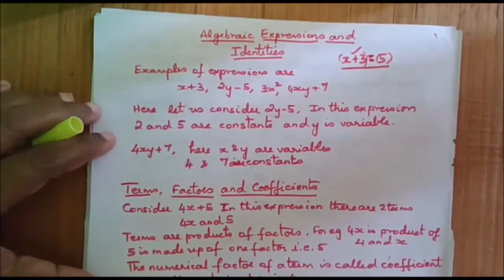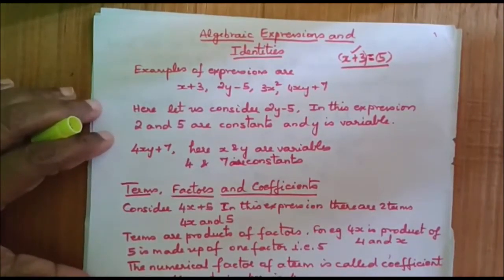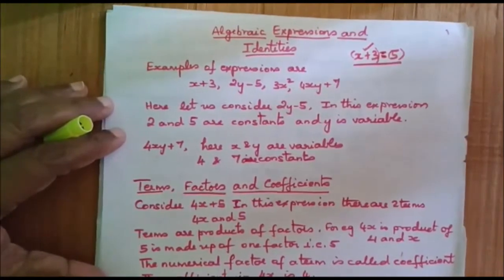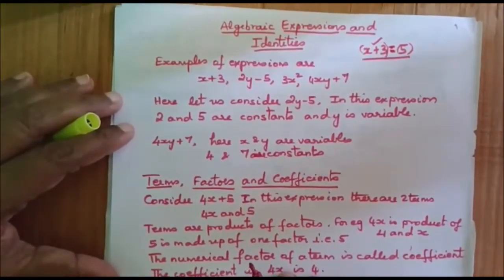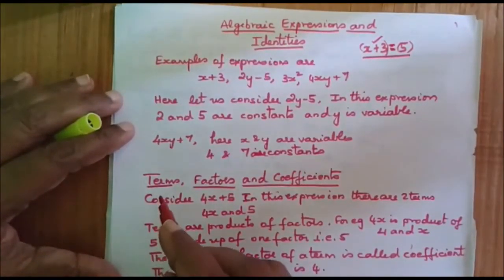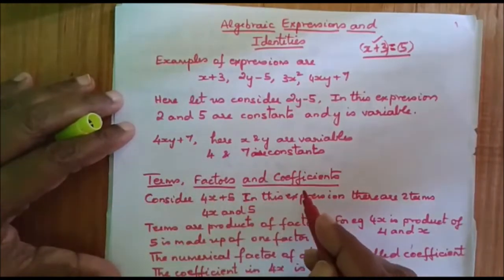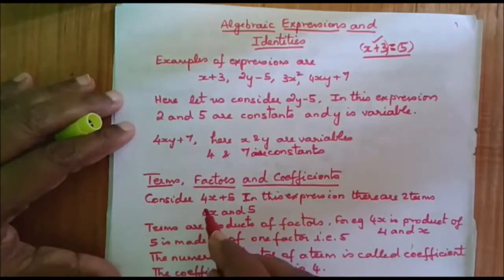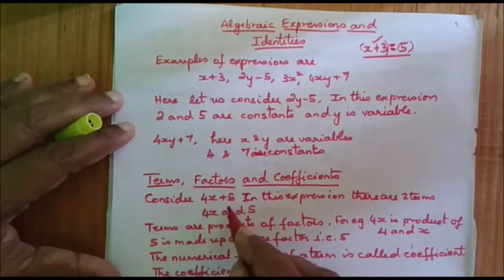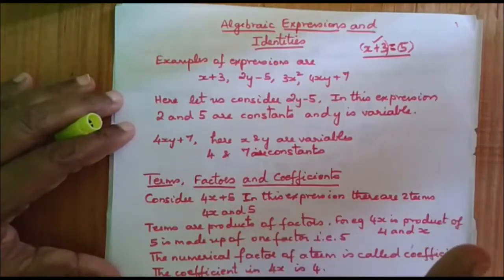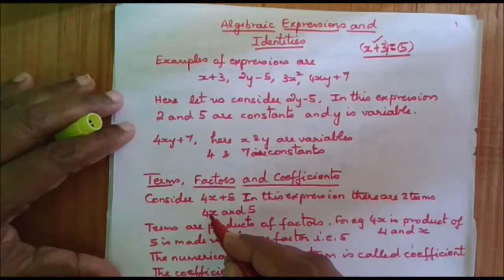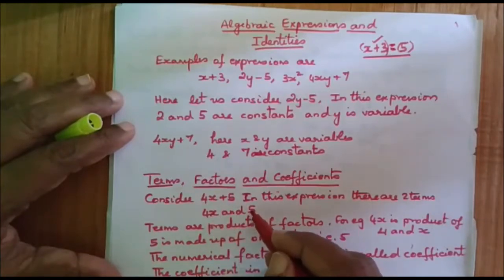Now let us learn some more concepts regarding expressions: terms, factors, and coefficients. When we say the expression 4x plus 5, in this expression there are two terms. What are they? 4x and 5. So 4x is one term and 5 is another term.